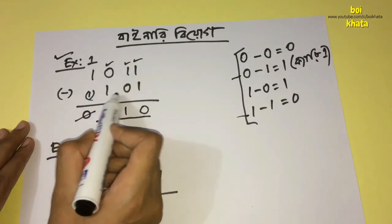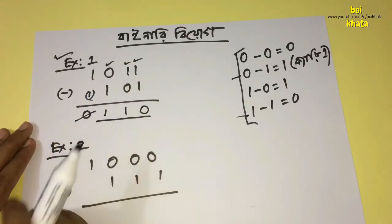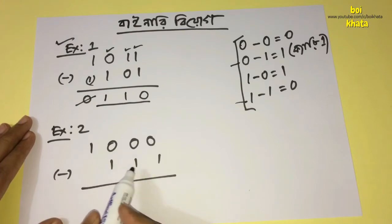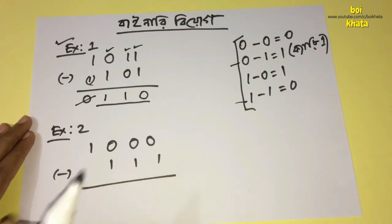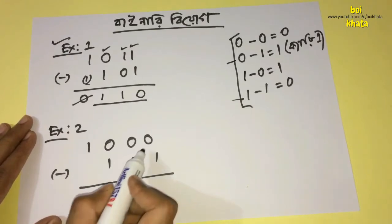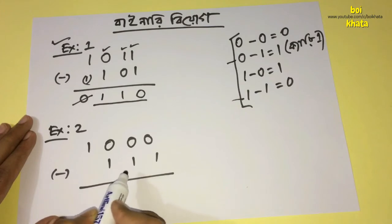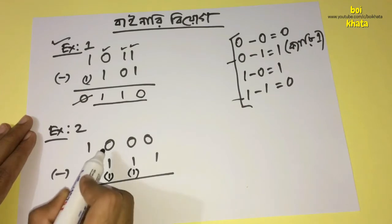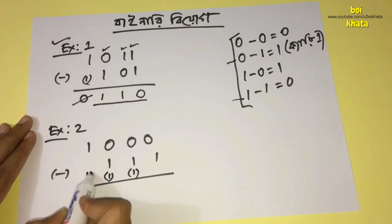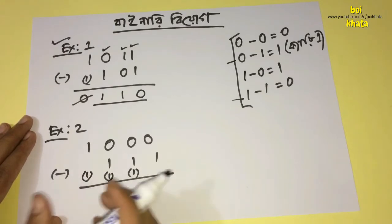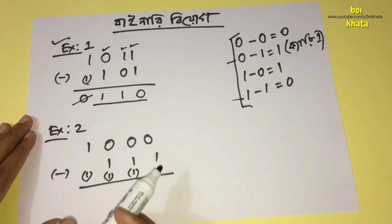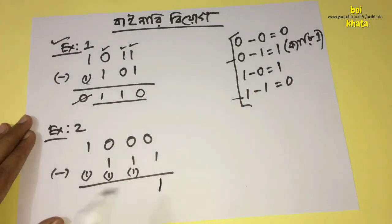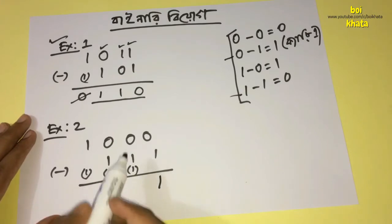0-1 gives 1 and there will be a borrow of 1. The result is 1-1-0. We are going to do Example 2. In Example 2, we see 1-000 minus 1. We borrow from 0, so from the first position we borrow 1. Borrowing from 0 means there will be a carry. Our first line is now complete.